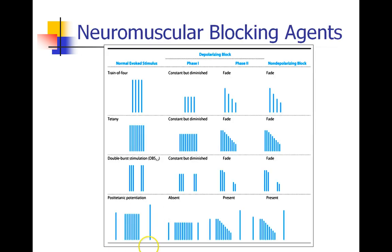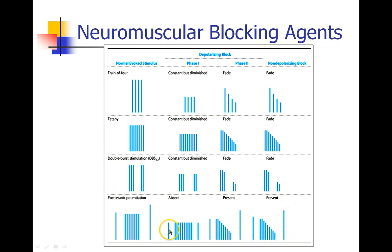In a normal person, the post-tetanic potentiation is present. In a phase two block or non-depolarizing block, post-tetanic potentiation is also present, but in phase one block, there is no potentiation.